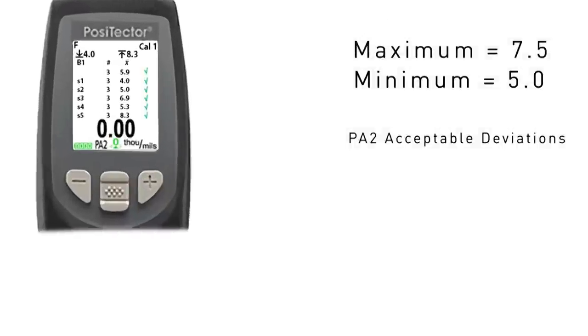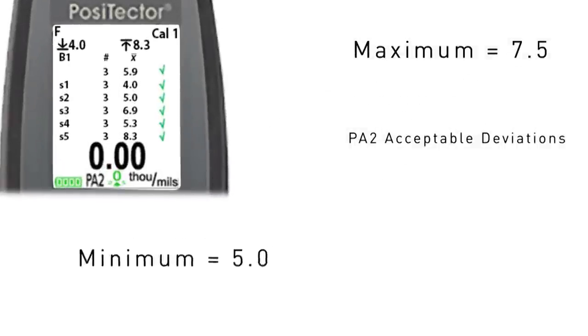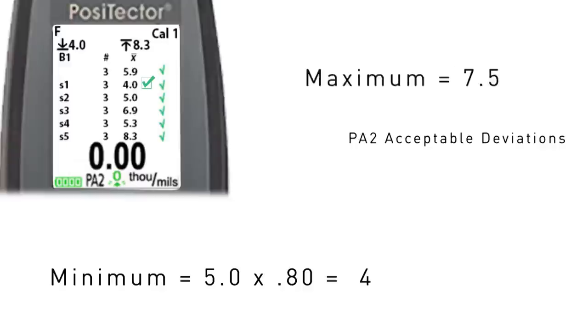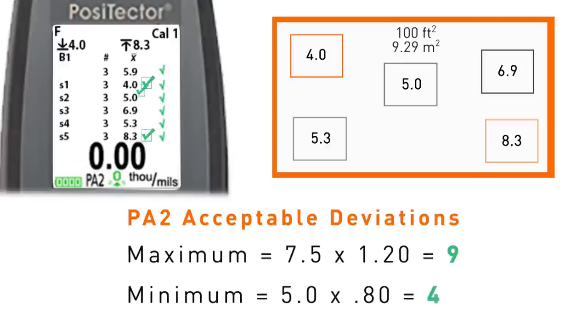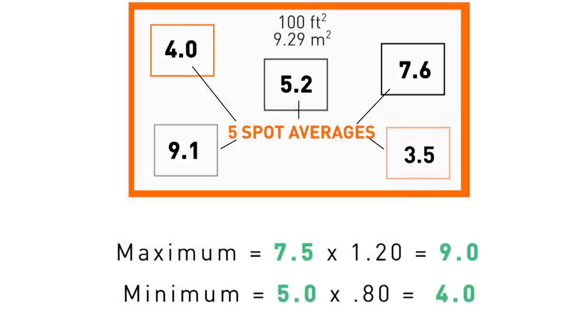In our example, that would be minimum 5 times 80% is 4. The maximum is 7.5 times 120 equals 9. Thus, any spot that falls between 4 and 9 is considered acceptable by SSPC PA2 standard. Spots lower or higher than 4 and 9 are not acceptable even if the overall 100 square foot area average meets the standard.